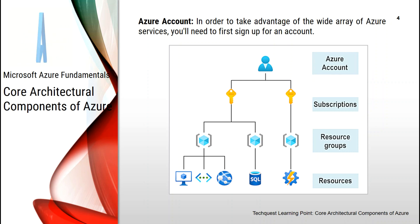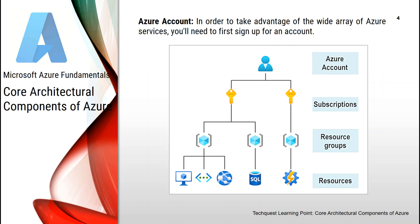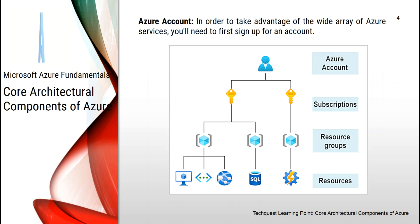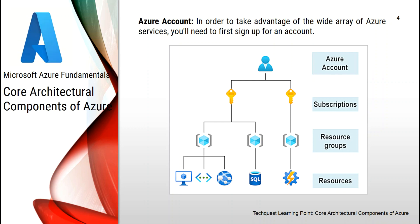Once you have an active Azure account, you may want to create additional subscriptions for resource or billing management purposes. If you have multiple subscriptions, you can organize them into invoice sections. Each invoice section is a line item on the invoice that shows the charges incurred that month. You can also set up multiple invoices within the same billing account by using billing profiles, and each billing profile has its own monthly invoice and payment method.